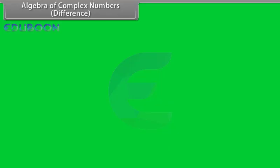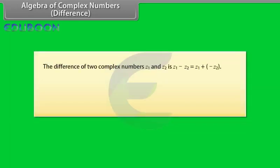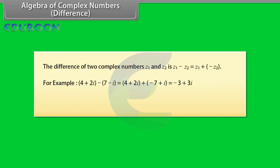Algebra of complex numbers — Difference. The difference of two complex numbers Z1 and Z2 is: Z1 minus Z2 equals Z1 plus (minus Z2). For example, Z3 equals 2 minus 3 iota.